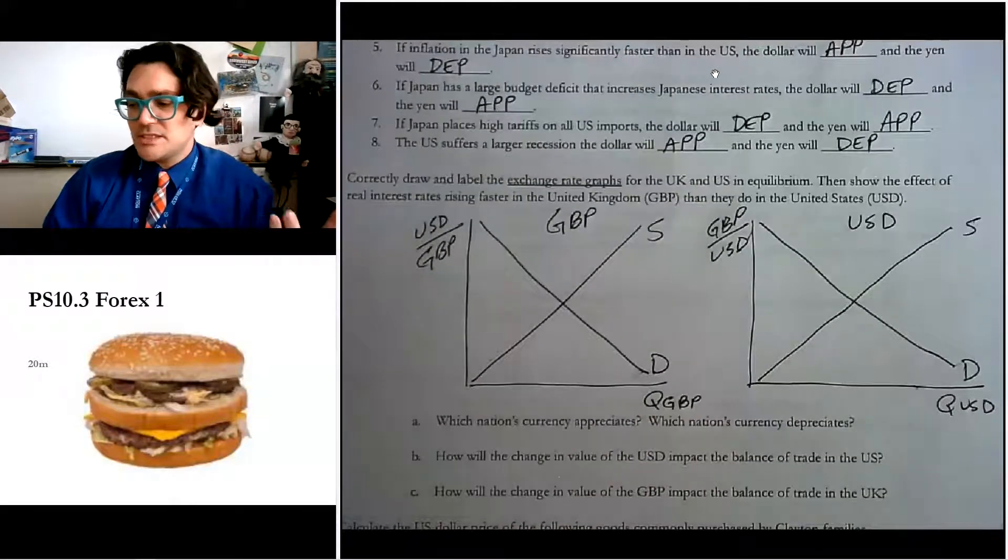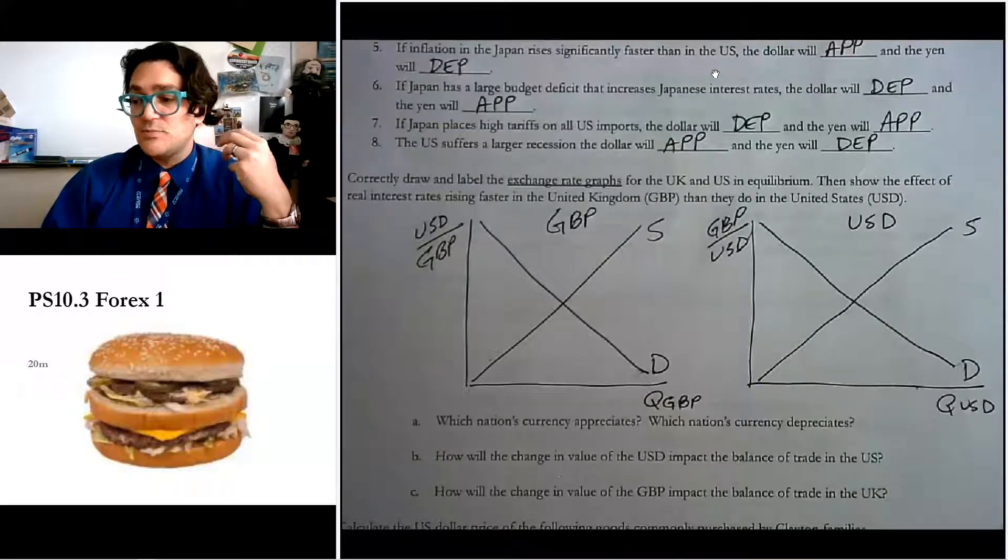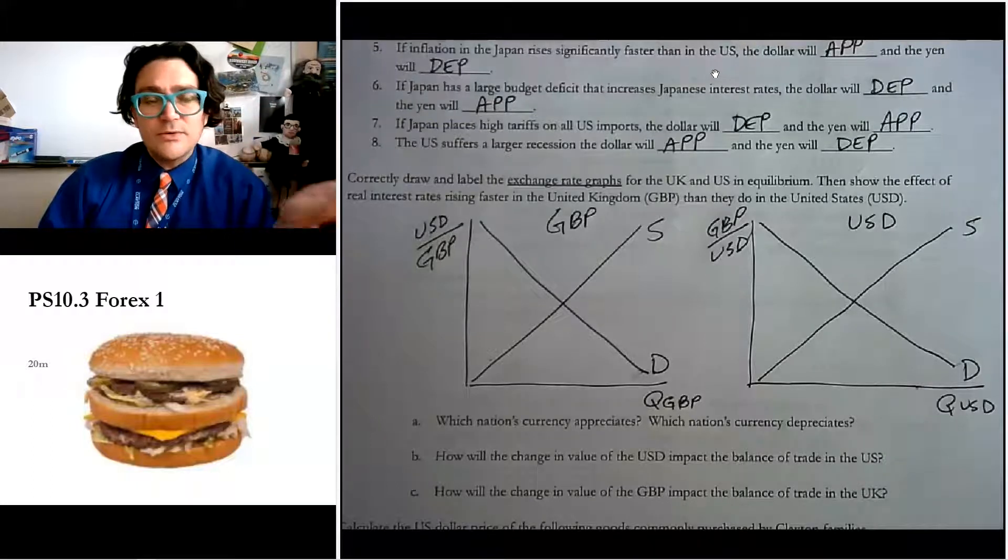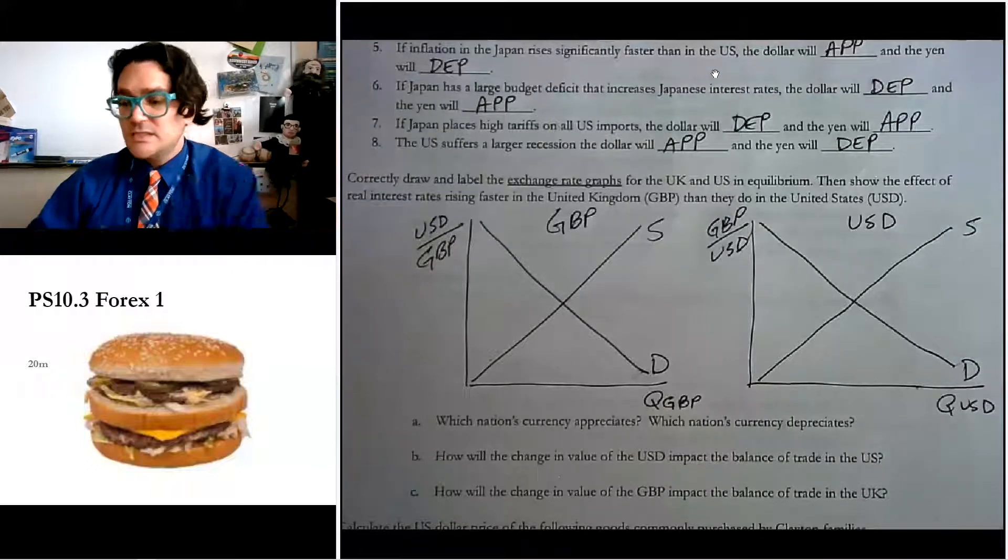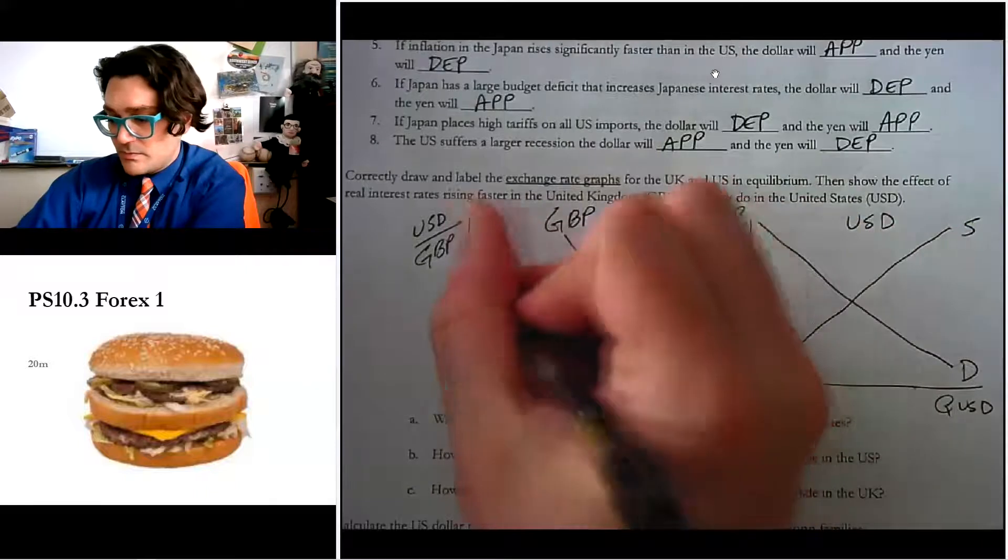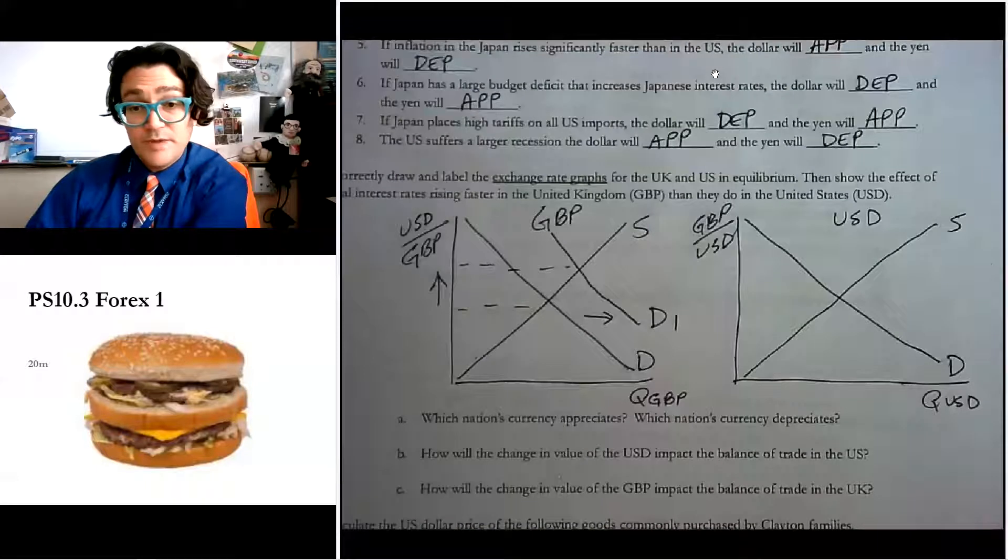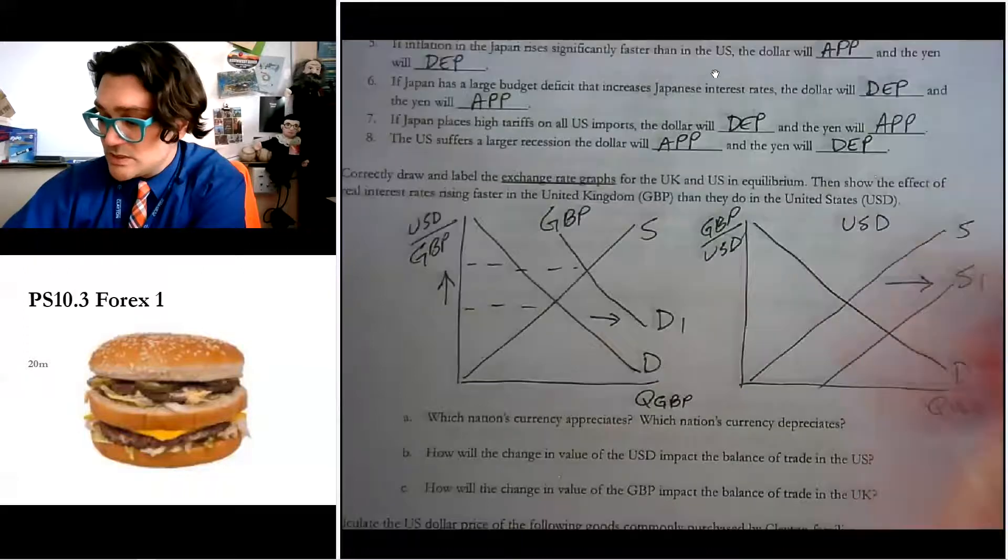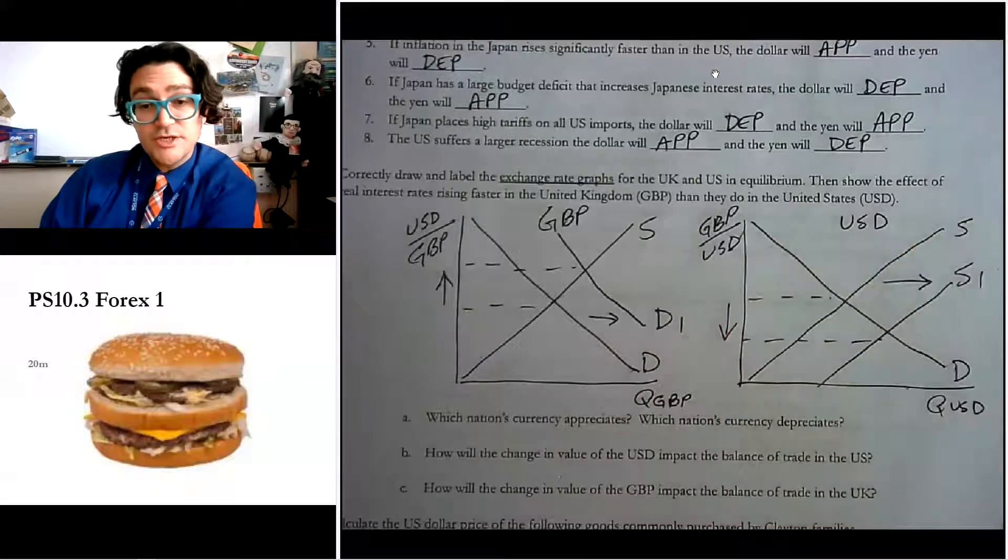And it says that interest rates rise faster in the UK than they do in the United States. So what's that going to do? Well, the Americans are going to look at that and go, gee, I really want to put my money into British loanable funds. I really want to buy British stocks, bonds, and real estate. I want to put my money in there. Well, what do they need in order to buy stocks, bonds, and real estate in Britain? Well, they need pounds. They need the British currency. So it's going to increase the demand for the pound. And it's going to cause an appreciation of the pound. At the same time, when they buy all those pounds, they got to supply more dollars in order to buy them. So the Americans are supplying more dollars, causing a depreciation of the dollar.